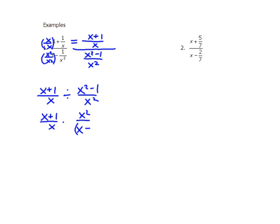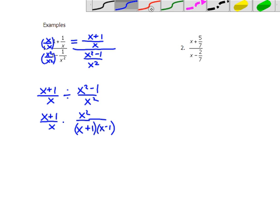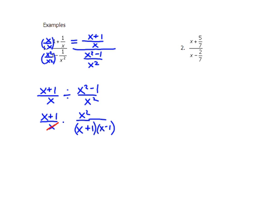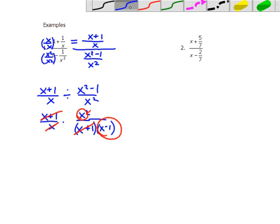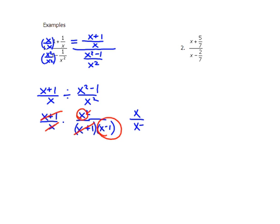I factor x-squared minus one using difference of perfect squares. Now I can start canceling: x into x-squared leaves x, and x plus one into x plus one cancels. Keep track of your leftovers. The final answer is not too bad — you can do this.